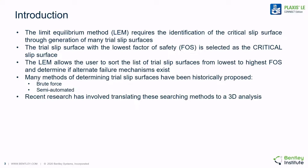The limit equilibrium method requires identification of the critical slip surface through the generation of many individual trial slip surfaces. Out of all the trial slip surfaces, that trial slip surface with the lowest factor of safety is selected as the critical slip surface. Some searching methods generate a series of trial slip surfaces that are unrelated to each other, while other searching methods update subsequent searches based on previous results. The limit equilibrium method allows the user to sort the list of trial slip surfaces from the lowest to highest factor of safety, and the user is able to examine the trials closest to the failure to see if alternative failure mechanisms exist.